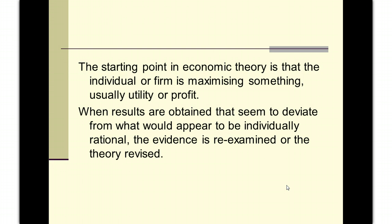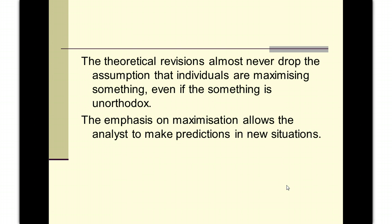Sometimes results are obtained that seem to deviate from what would appear to be individually rational. In these instances the evidence is re-examined or the theory is revised. But in almost all cases, the revisions never drop the maximising hypothesis — that is our basic building block, that we assume people are trying to make something as big as possible.